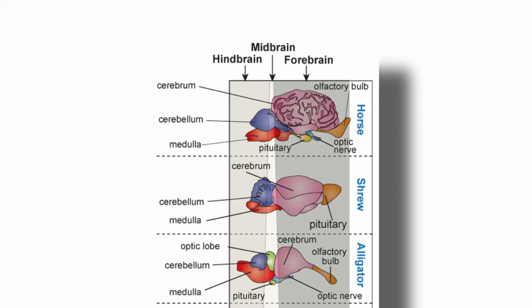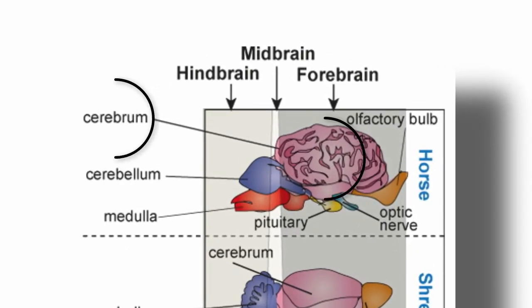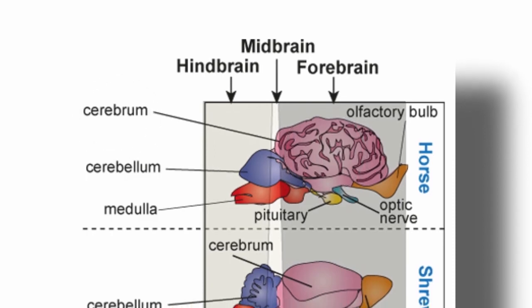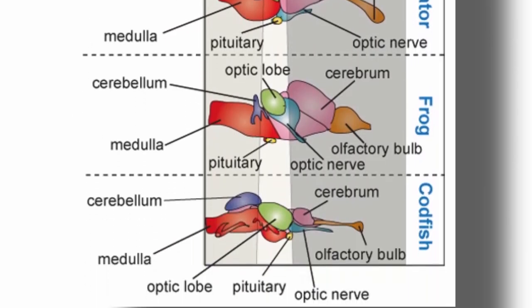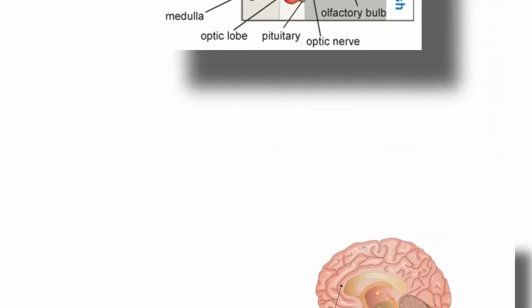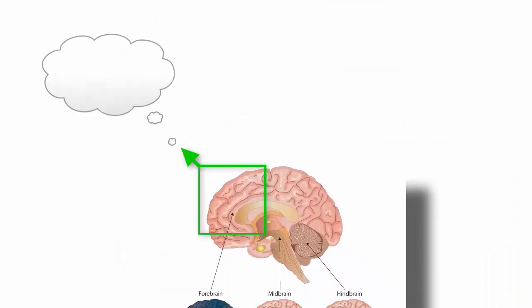What appears to change most drastically across species is the size of the cerebrum, which is the part of the forebrain. As previously discussed, the forebrain is the most evolutionarily advanced because it controls higher order cognitive processing, such as planning and problem solving, that makes humans the most advanced animals on earth.